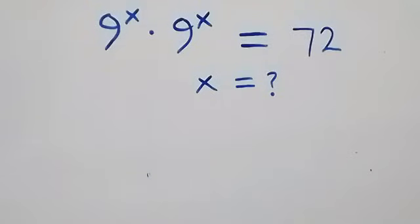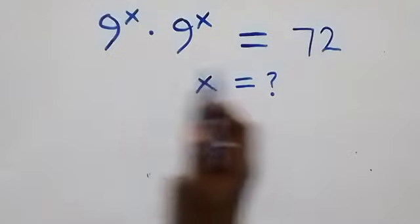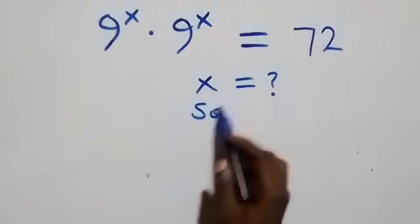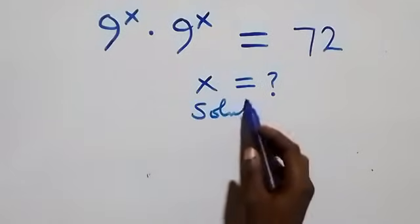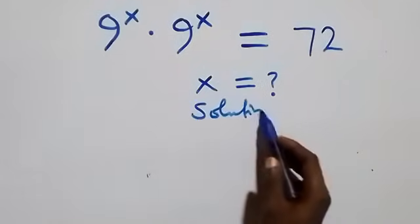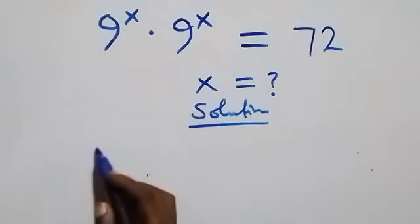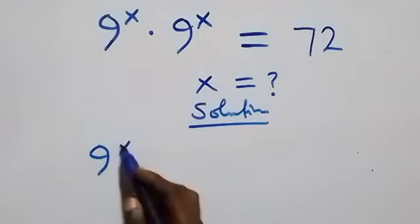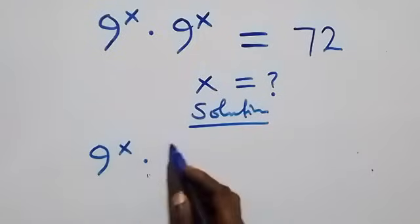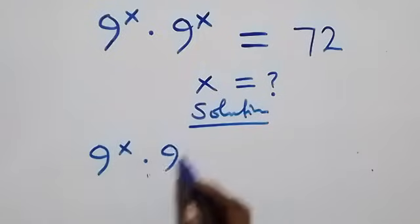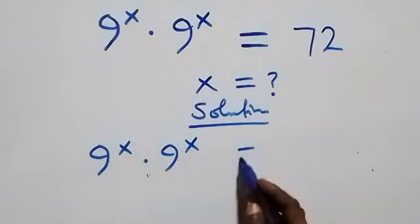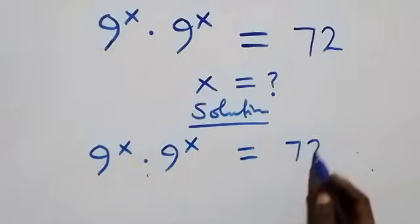Hello, you are welcome. We are going to solve this nice exponential equation. What we have here is 9 raised to power x times 9 raised to power x equals 72.